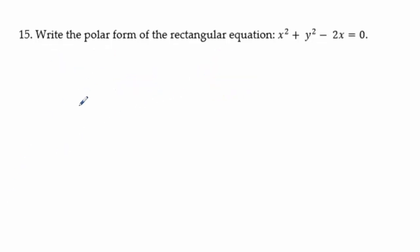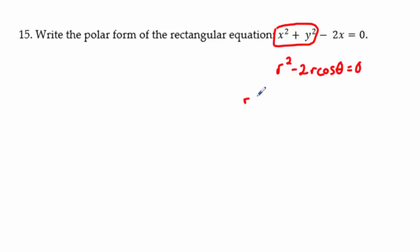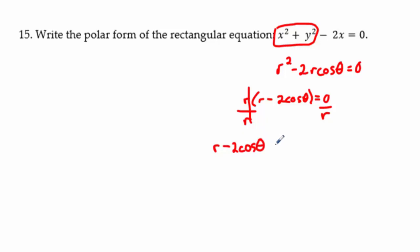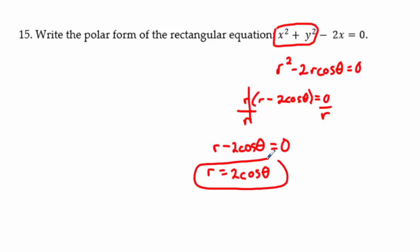Problem 15: x² + y² − 2x = 0. Substitute r² for x² + y² and r cosθ for x: r² − 2r cosθ = 0. Factor out r: r(r − 2cosθ) = 0. In polar equations, we can divide by r since extra r values give redundant solutions. So: r = 2cosθ.